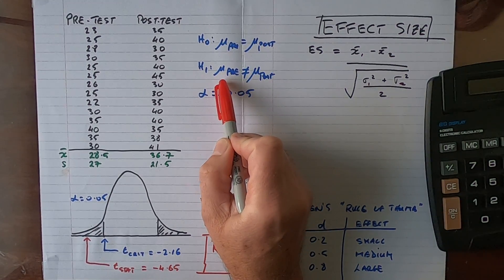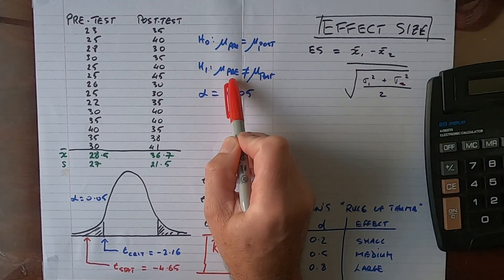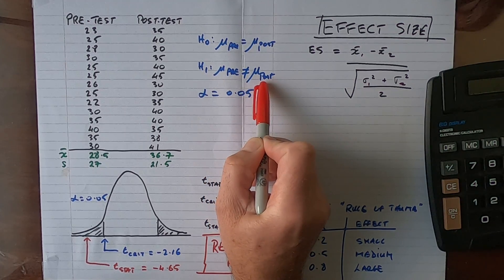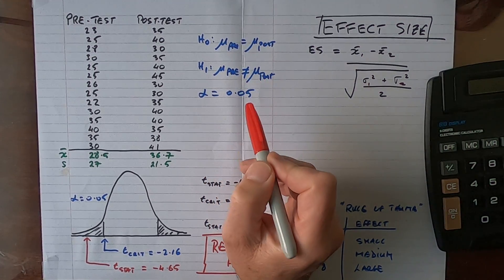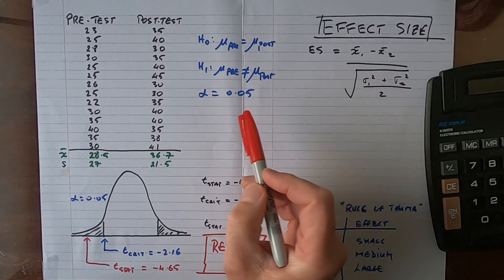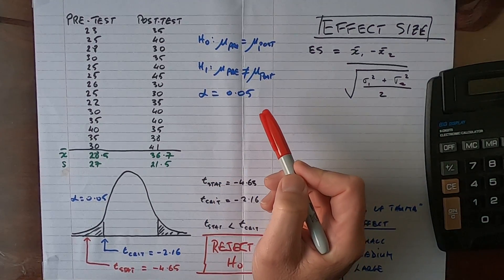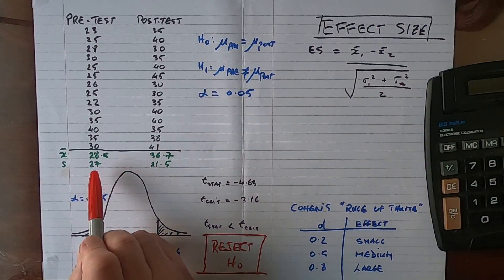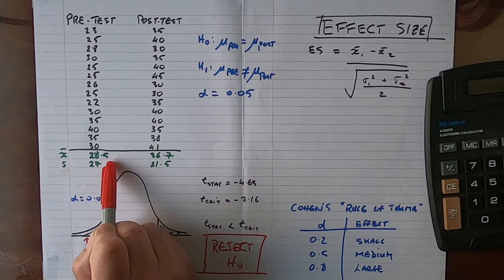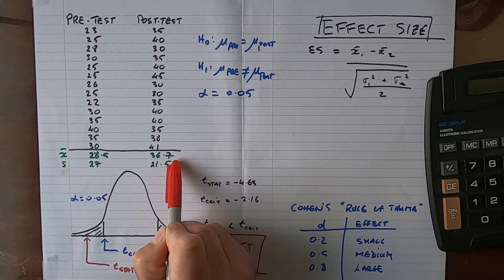The alternative hypothesis is the population mean pre-test score is not equal to the population post-test score. I'm looking for a difference and not specifying any direction here, and I've conducted this test at an alpha value of 0.05. I've already calculated the sample means here at 28.5 for the pre-test and 36.7 for the post-test.